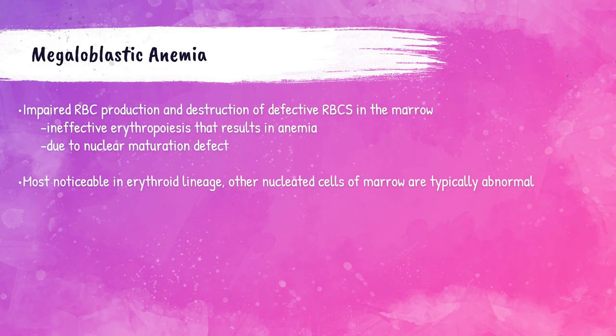Both folate and vitamin B12 function in the production of DNA and red blood cells. If there are nuclear maturation defects in red blood cells caused by these deficiencies, the body will destroy those red blood cells or red blood cell precursors. With so much ineffective erythropoiesis happening in the bone marrow, normal red blood cells are not produced or are produced in lower quantities — and this is what leads to the anemia.